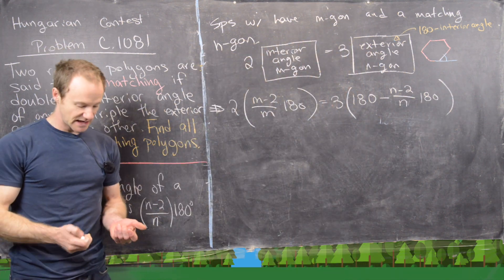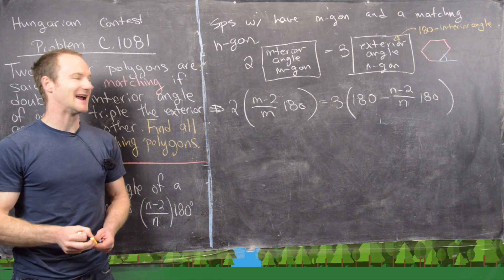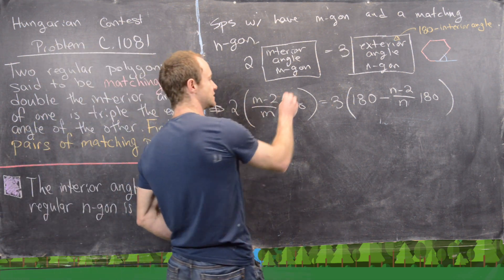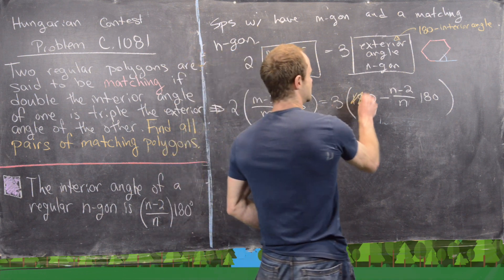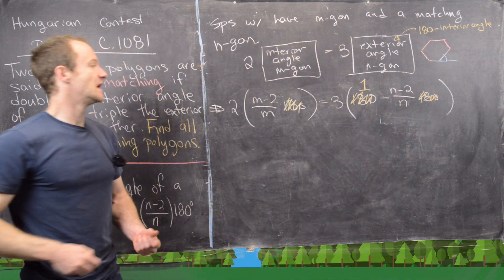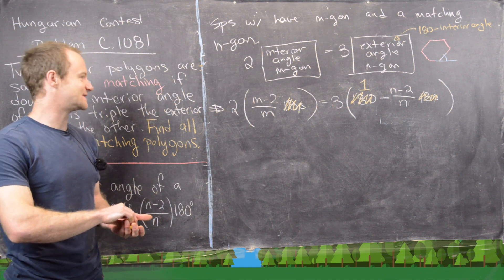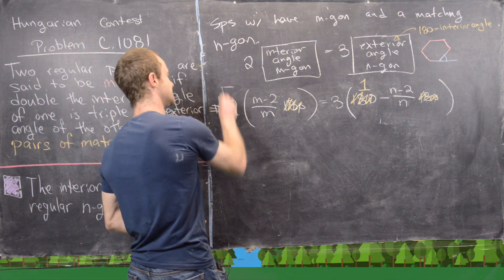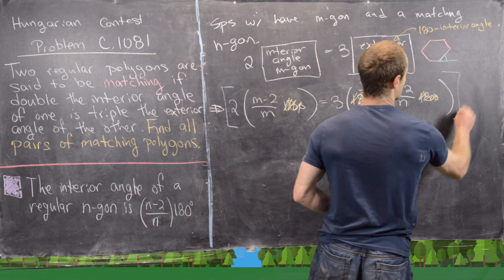So let's see the equation that this sets up. Now we have 2 times (m-2)/m times 180 equals 3 times the exterior angle of an n-gon. So that's going to be 180 minus (n-2)/n times 180.